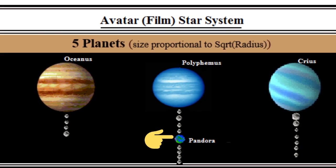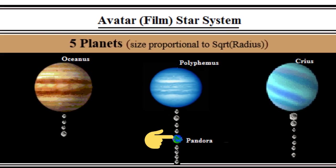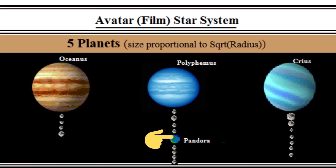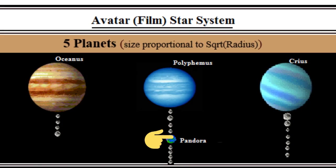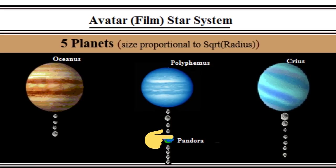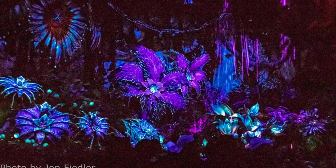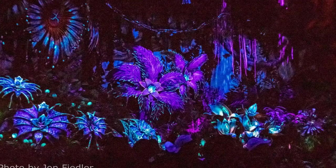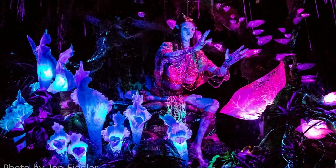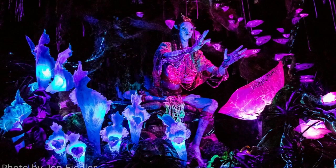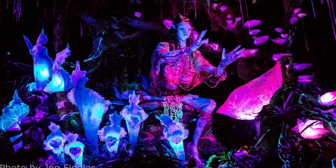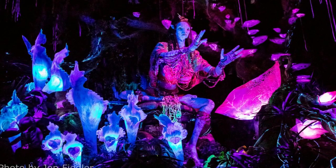Based on the movie Avatar which is a fictional world that takes place on a moon called Pandora, which orbits a gas giant planet in the Alpha Centauri system. The world is home to a variety of unique and fascinating creatures, plants, and landscapes. The main humanoid species on Pandora are the Navi, a tribal people who live in harmony with nature and have a deep spiritual connection to the planet.